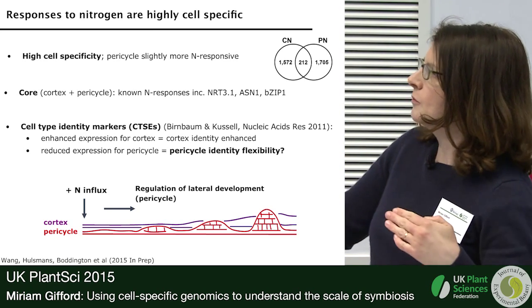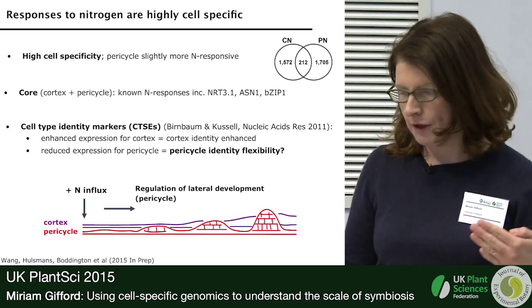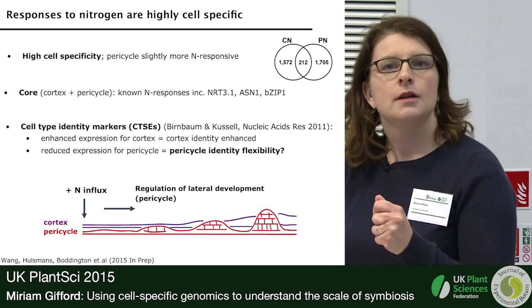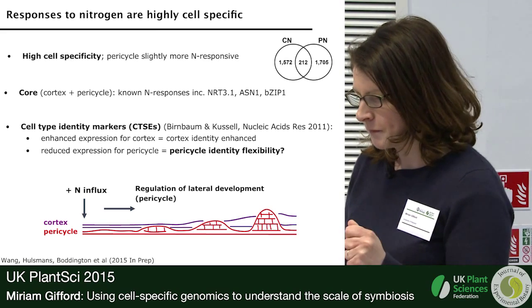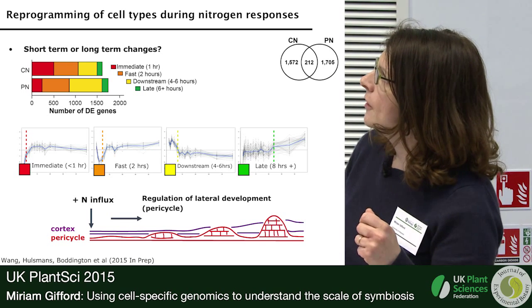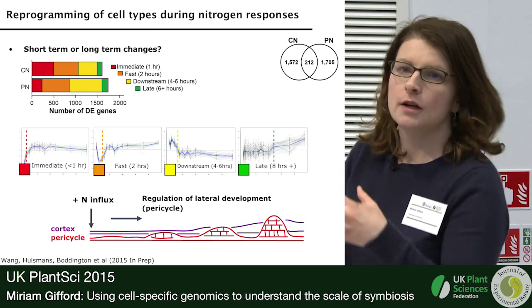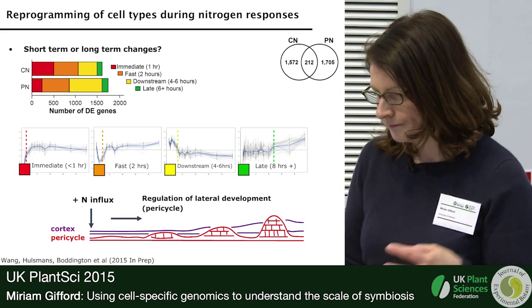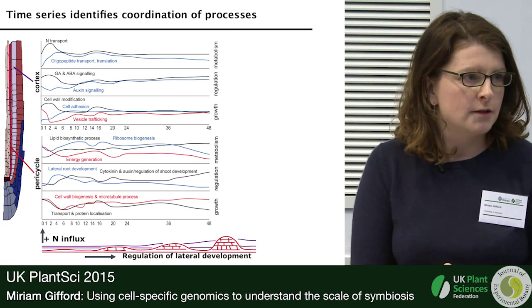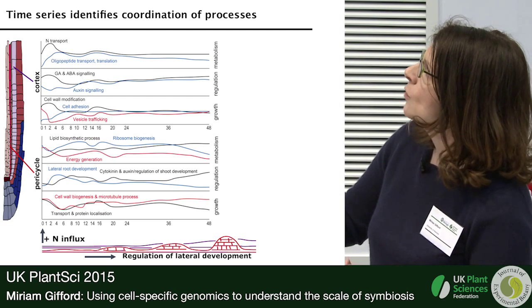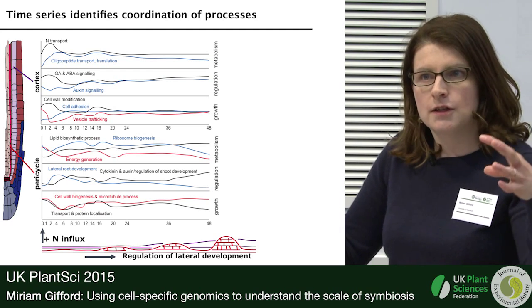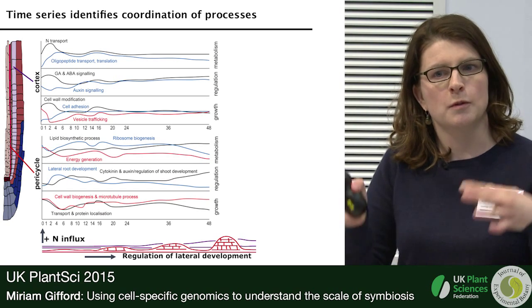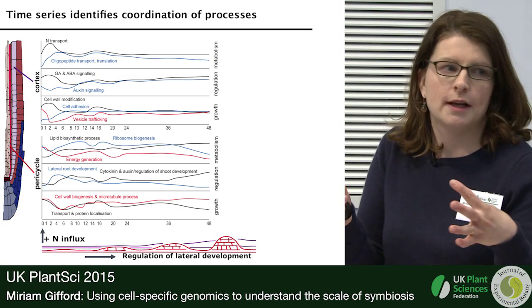I've put a small schematic here showing the two cell types. When we add nitrogen, we know that longer-term there's activation of cell division and formation of lateral root primordia. Using our time series data — with very high-resolution information — we can map out changes over time and link these to development, categorizing genes by when they change. Most genes change very early, within one to two hours of our 48-hour time series. In cortical cells we can see an early response to nitrogen, transport activation, hormonal signaling variation, and even modification of the cell wall.